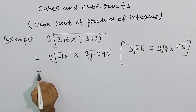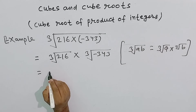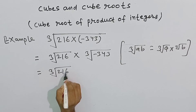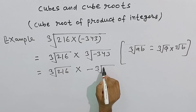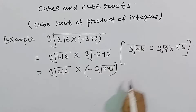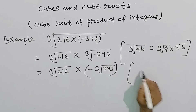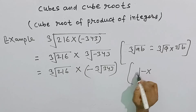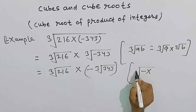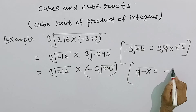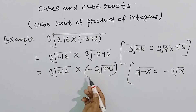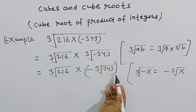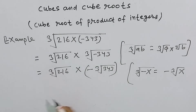Is equal to cube root of 216 into negative of cube root of 343, क्योंकि हमने पहले ही कहा किसी भी integer x के लिए cube root of minus x is equal to minus of cube root of x होता है। तो इस तरह से हमने minus को बाहर निकाल लिया और अब हमारे पास cube root of 343 बच गया।